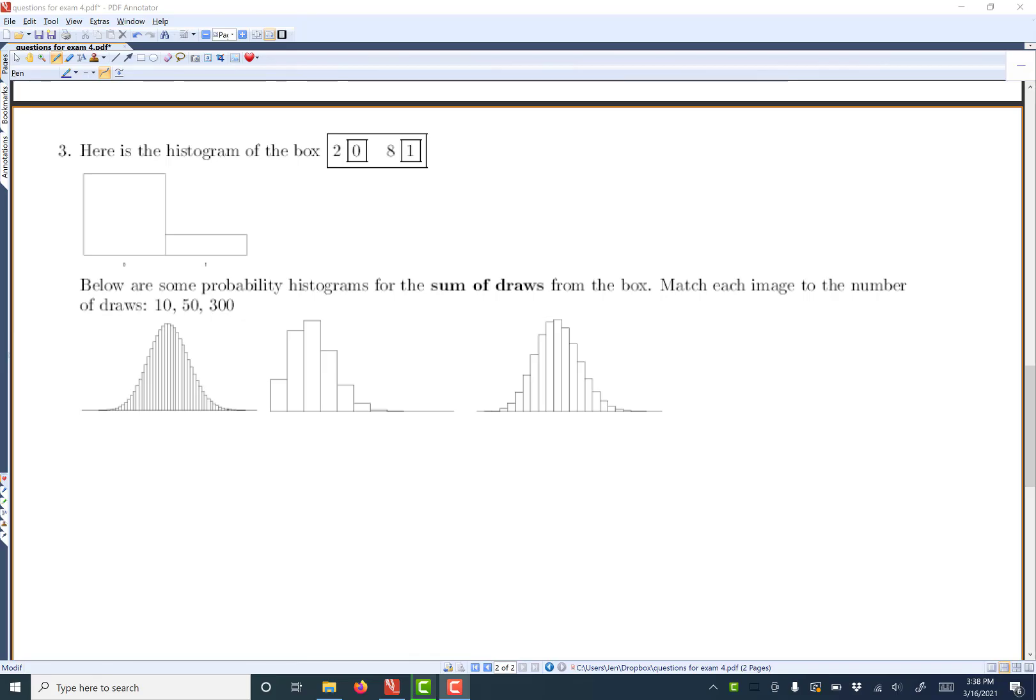So, this problem comes from chapter 18 when we learn about probability histograms. What this does is if I have a box with two zeros and eight ones, I could draw a histogram of that using what we know about histograms. Now, in this chapter, I'm not expecting you to draw these graphs and you don't have to know how to do it.